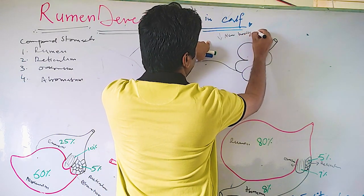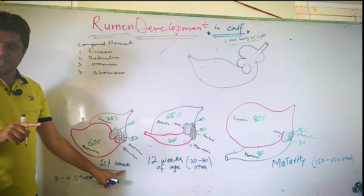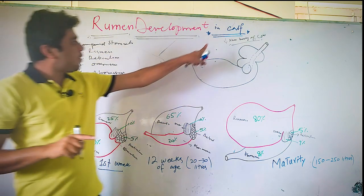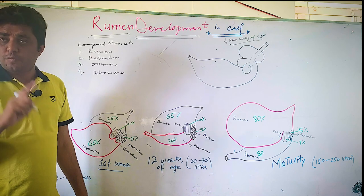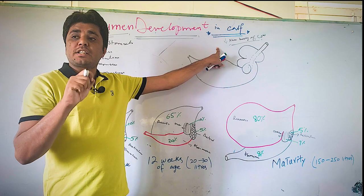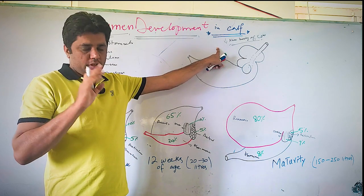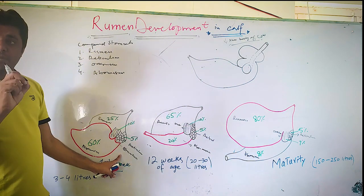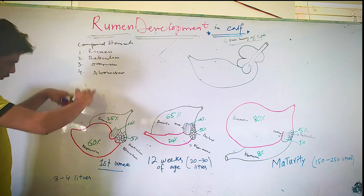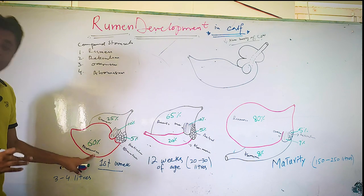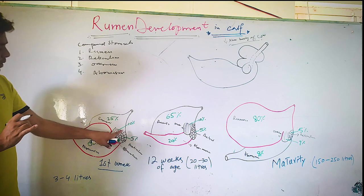Now, what about a newborn calf? At birth and up to the first week, the calf does not have a fully developed rumen. They cannot be called true ruminants at that stage. When you look at the stomach of a one-week-old calf, 60 percent of the total stomach capacity is the abomasum — the largest part — with only 25 percent being rumen.